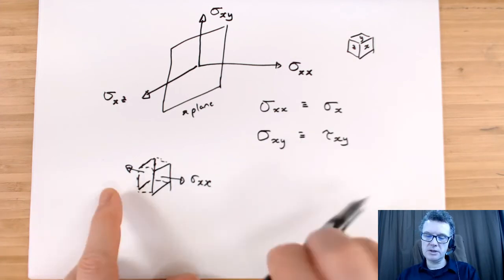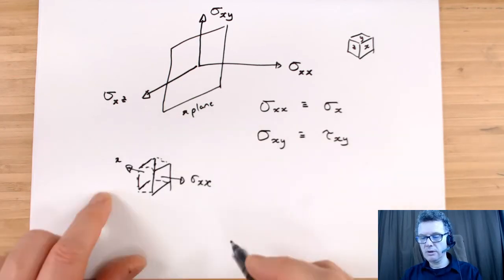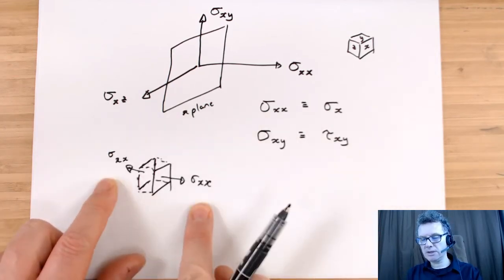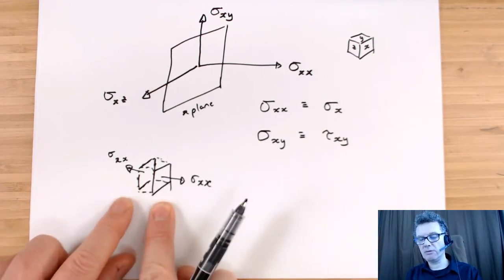So the x is first finger pointing away in this direction here. So this stress on the far side has to equal this stress on the nearside because this cube is not moving in the x direction.